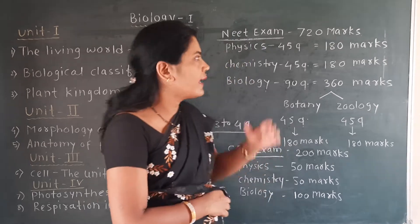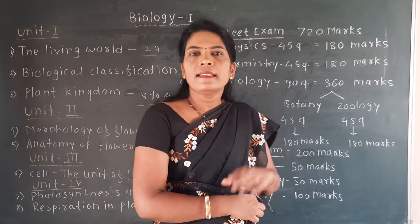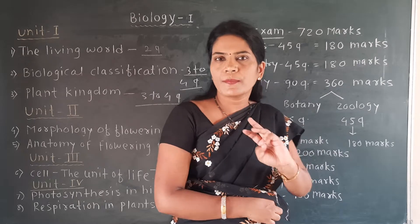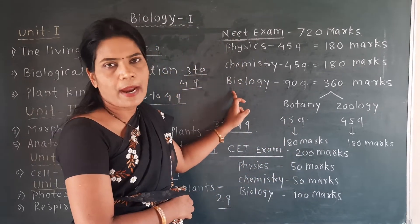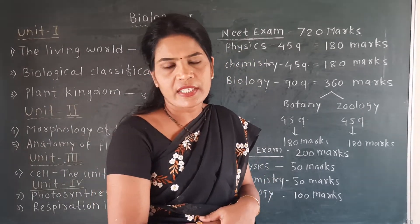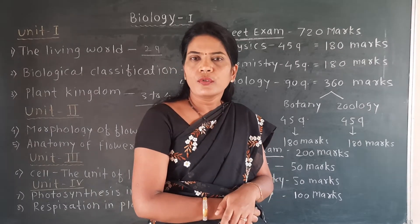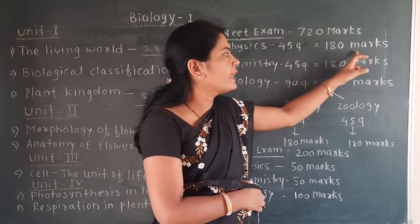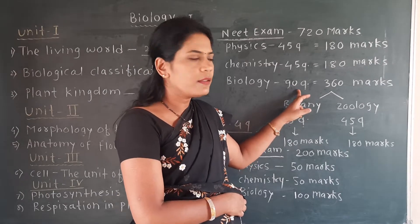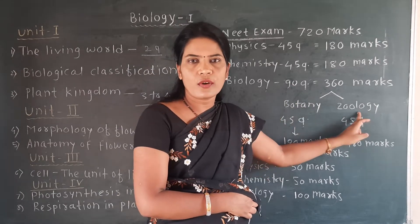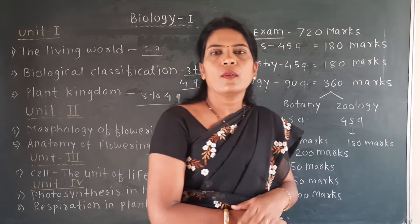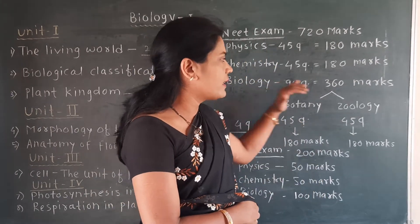This exam carries a total of 720 marks and has three subjects: physics, chemistry, and biology. Physics and chemistry each have 44 questions, and one question carries 4 marks, so the total marks for each of those subjects is 180. Biology has 90 questions divided into two sections — botany with 45 questions and zoology with 45 questions — giving a total of 360 marks for biology.